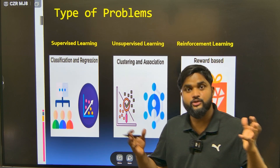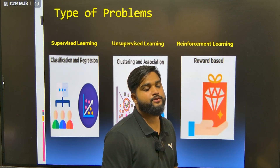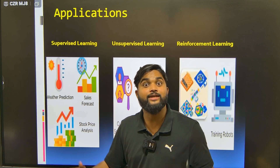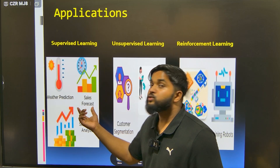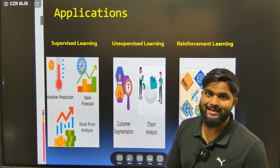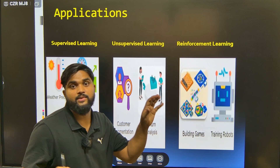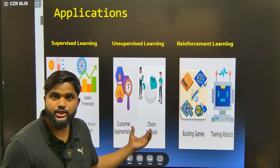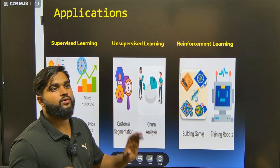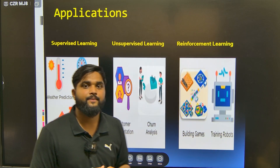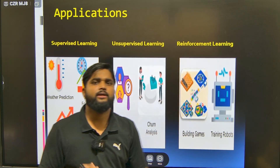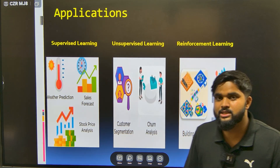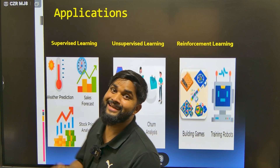Let's look at the applications. Supervised learning applications include weather prediction, sales forecasting, and stock price analysis. Unsupervised learning applications include customer segmentation and churn analysis. Reinforcement learning applications include building games and training robots. These are the key applications of supervised, unsupervised, and reinforcement learning.